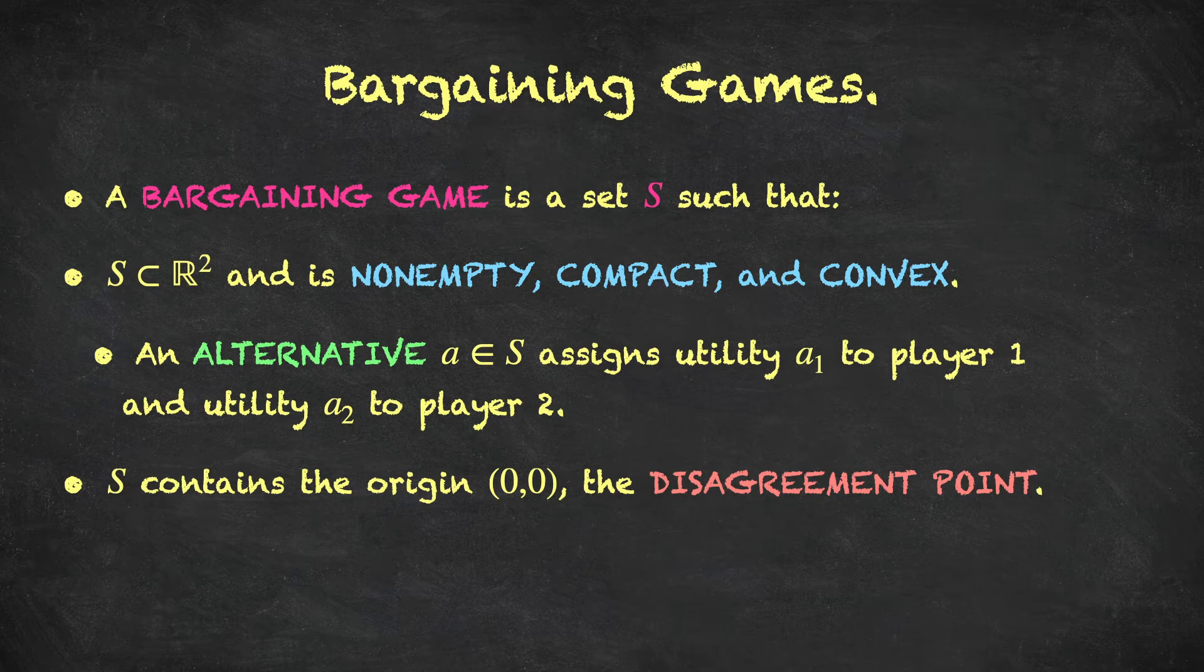We'll typically denote capital S or capital T and so on, and we make the following assumptions, which we will discuss a little further in the next few slides. So, we're going to assume that this set S is a subset of the plane, which essentially means we're modeling two-player bargaining games. So, every point in the set S has two dimensions, a utility for player 1 and a utility for player 2. So, these utilities, more specifically, are von Neumann-Morgenstern utility numbers.